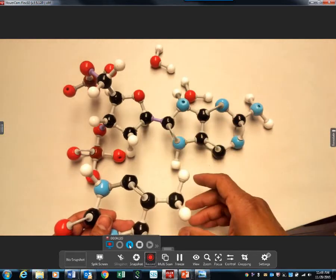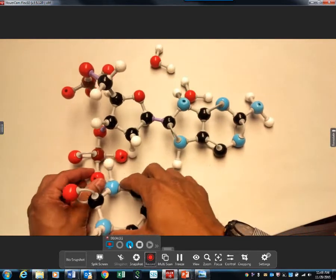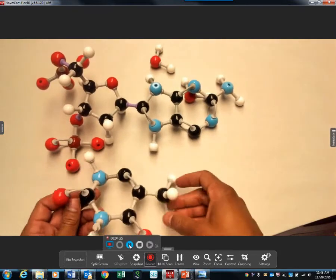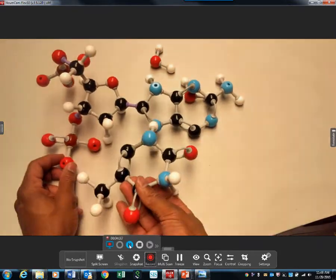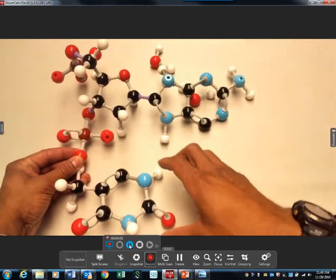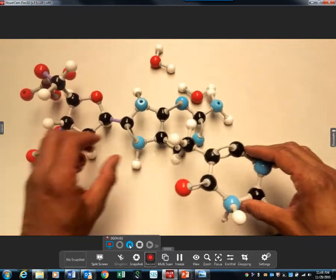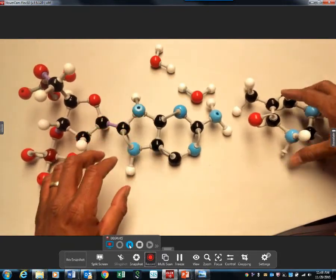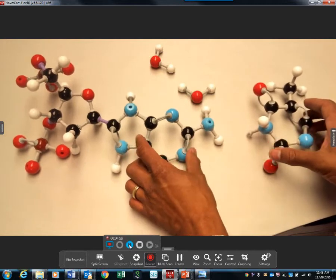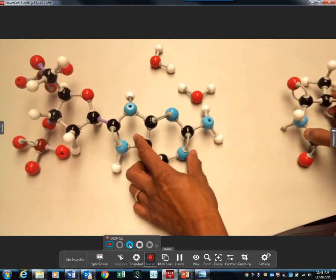So say this is adenine. Adenine would come in and attach - I'm sorry, this is adenine, this would be thymine - and it would attach. I grabbed it in the wrong spot. It would attach to this phosphate. We keep building our nitrogen base.